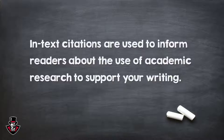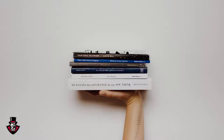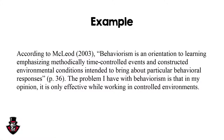In-text citations are used to inform readers about the use of academic research to support your writing. Additionally, they provide information about the author or authors, if more than one, year of publication, and page numbers when quoting.